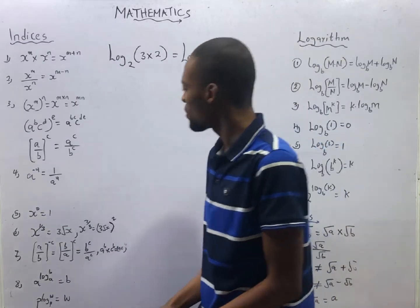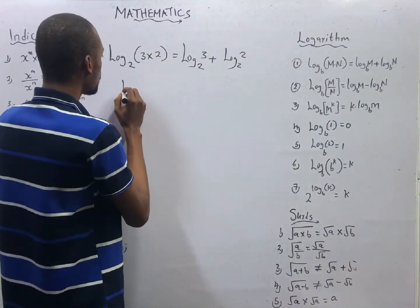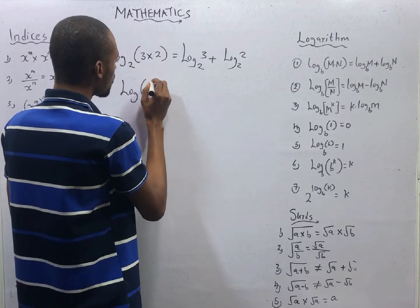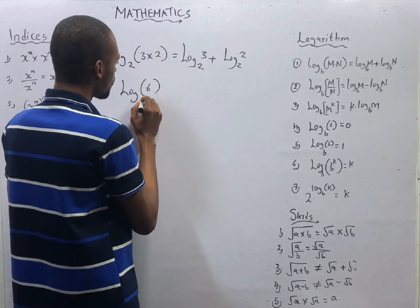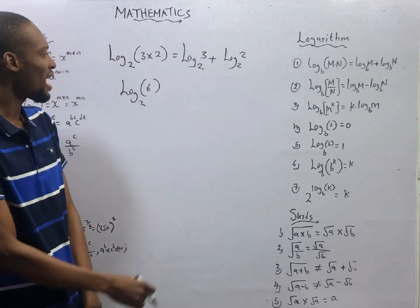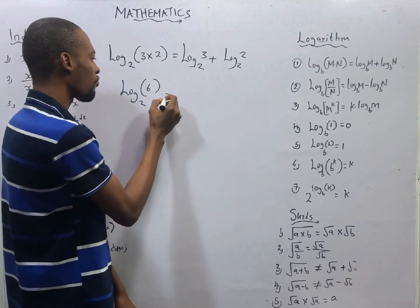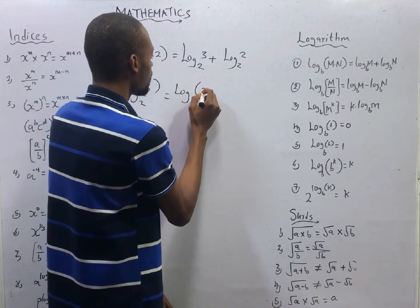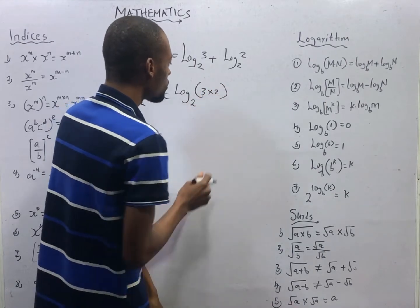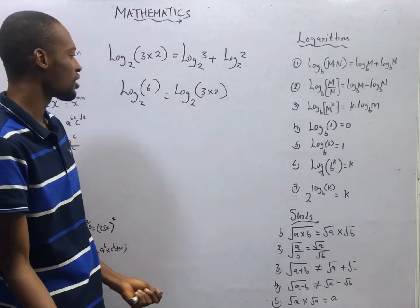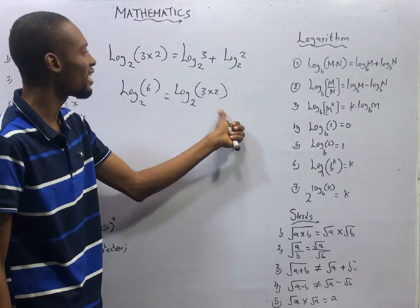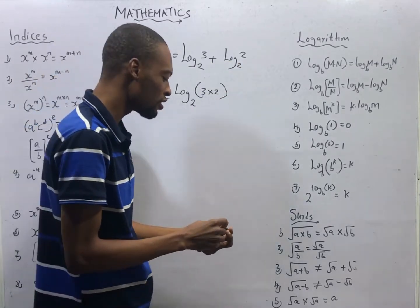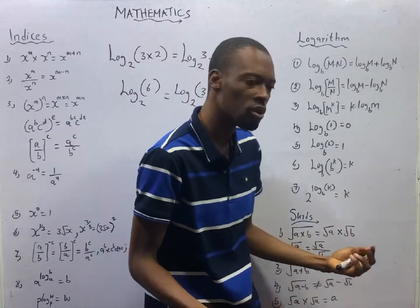Looking at this law, it simply means if you have log 6 to base 2, I can expand this to be log of 3 times 2, because 3 times 2 is 6. Then from here, I can arrive at log 3 base 2 plus log 2 base 2. That is the first law of logarithms — the multiplication law.